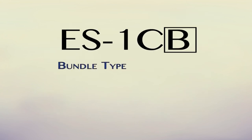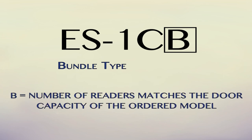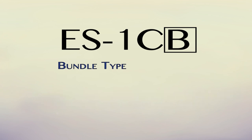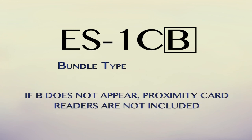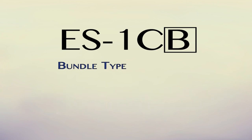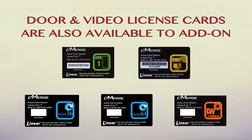Part four of the model number specifies the reader bundle type. The letter B at the end of the model number indicates the system includes a number of readers that match the door capacity of the individual model being ordered. If the letter B does not appear at the end of the model number, proximity card readers are not included with the system. Remember that door and video license to go cards are also available for purchase to add additional doors or integrated video recording capability to your E3 system.